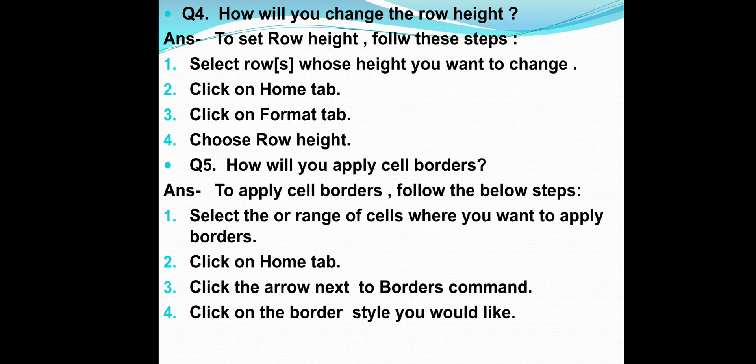Question 4: How will you change the row height? Answer: To set row height, follow these steps. First, select rows whose height you want to change. Second, click on Home tab. Third, click on Format tab. Fourth, choose Row height.